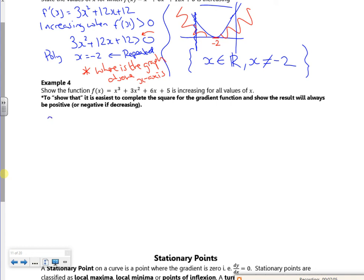So it says here, differentiate it first. So f dashed of x is 3x squared plus 6x plus 6. I'm running out of time. What I'm going to do now, because it's to show that, what I want to do is I want to show that the gradient graph is above the x-axis.